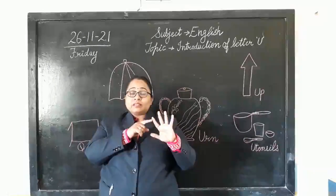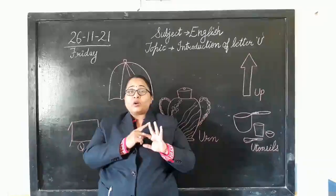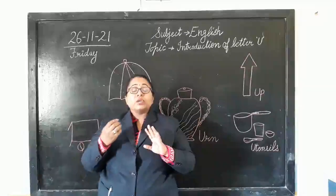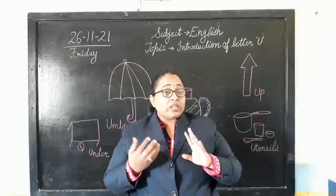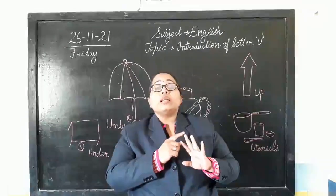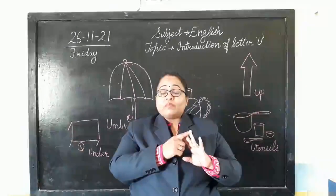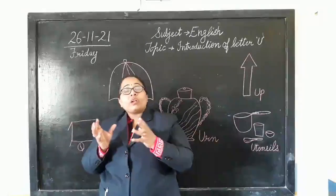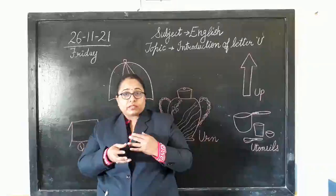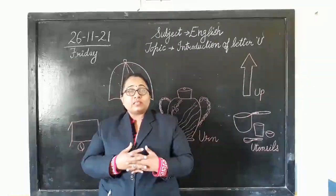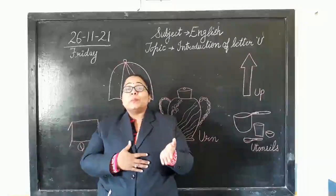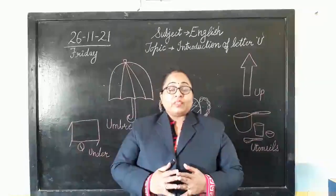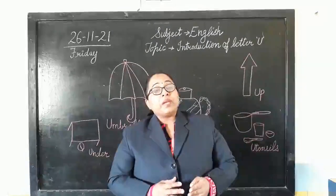Ball, bat, then broom. You know what a broom is? Jharu — your maid auntie cleans the house in the morning with a jharu. That jharu is called broom. Then we have bed and basket — something in which we keep fruits, vegetables, and different things. So the sound of letter B is B. B says B.